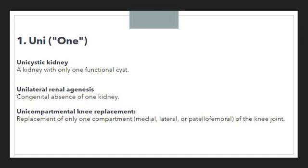Unilateral renal agenesis refers to the congenital absence of one kidney. If by birth someone has only one kidney and is living with only one kidney, we can say it is unilateral renal agenesis — congenital absence of one kidney. Again, the 'one' is represented by the prefix uni. Then we have 'unicompartmental knee replacement,' meaning replacement of only one compartment of the knee joint.